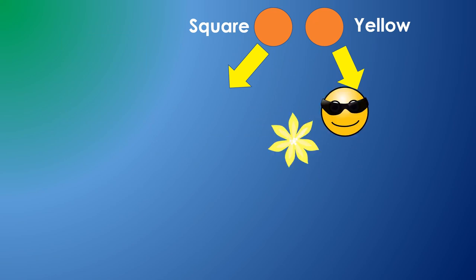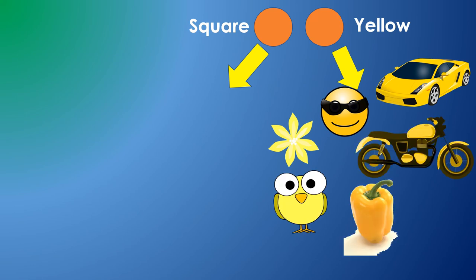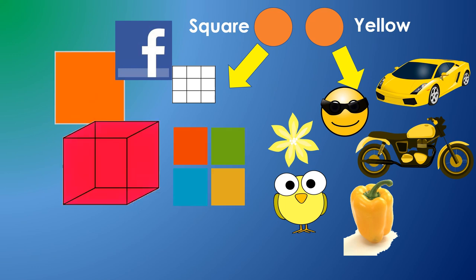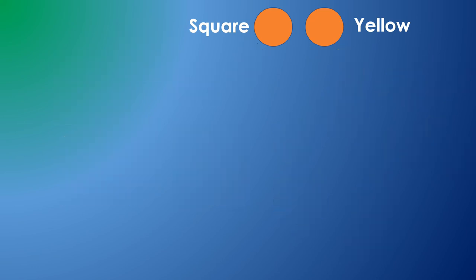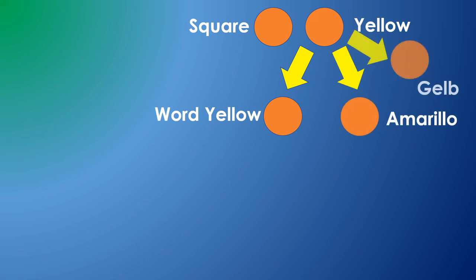Multiple connections can make these relationships two-way, so if your yellow neuron fires, it can bring to mind different yellow objects, or fire the square neuron and recall square objects. We can expect the abstract yellow neuron to be connected to a neuron representing the word yellow. If you are multilingual, you might have multiple word neurons relating to the abstract yellow neuron, to represent different words in different languages.